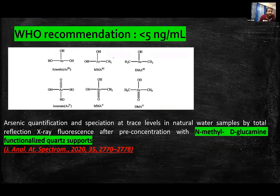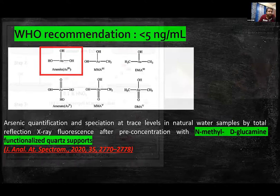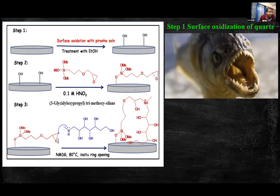Arsenic is present in different species: organic forms and two inorganic forms. Among the inorganic forms, arsenic-3 is the most toxic. In this work, I developed a novel absorbent called N-methyl-D-glucamine (NMDG) and functionalized it on a quartz sample support. This novel absorbent was used for the speciation of arsenic in different types of water samples.